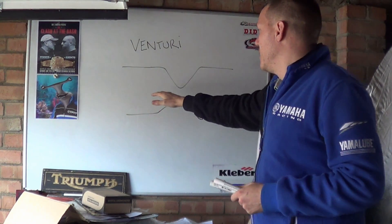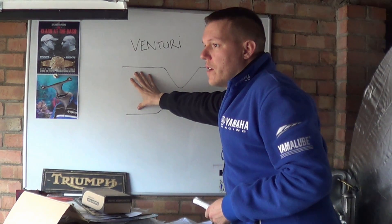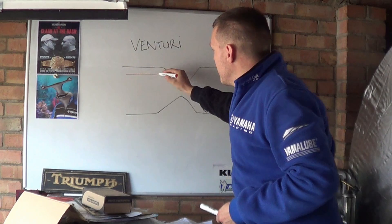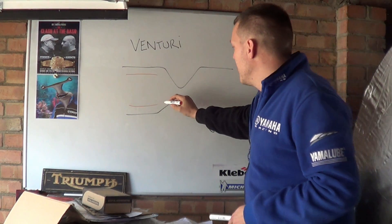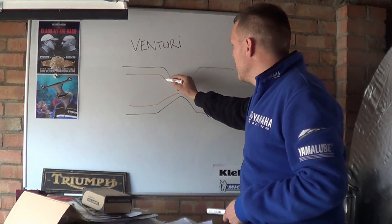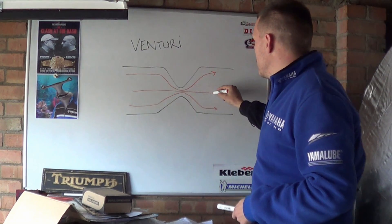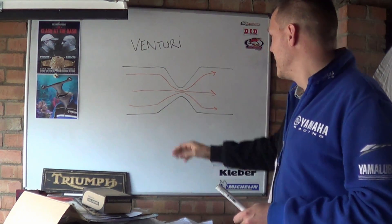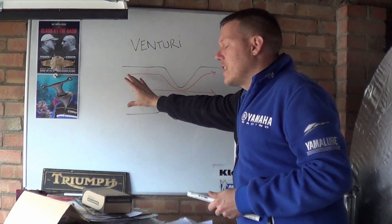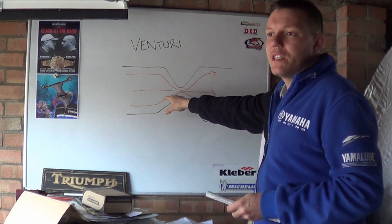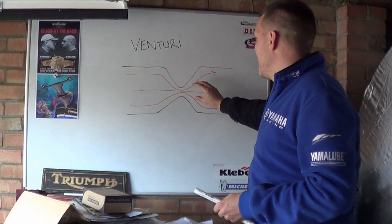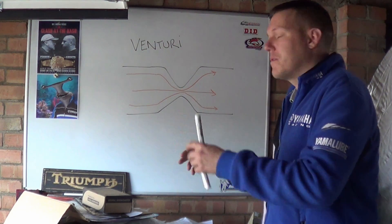The way this works is you have a restriction — a nominal cross-section, then a restriction, then you return to that nominal cross-section. As your flow enters the Venturi you have a convergent nozzle and then it expands outwards to a diffuser. At the centre of the restriction the flow is compressed, its pressure drops slightly, and then you have acceleration — the flow speeds up. When it gets back out to the diffuser section it expands, slows down, and returns back to normal.